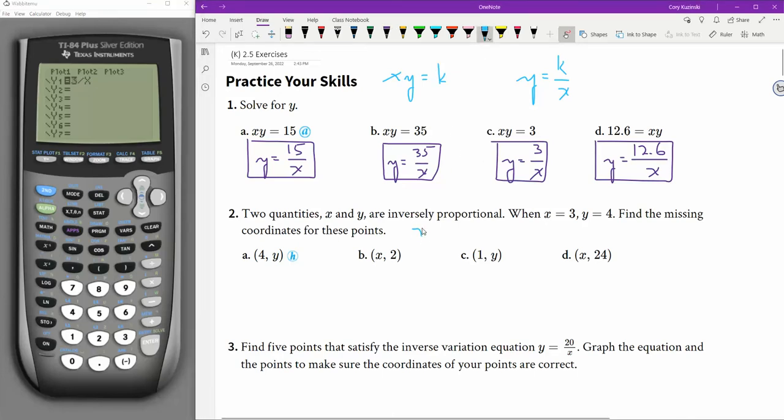So, x times y equals k, right? So, in this case, x is 3 and y is 4 and 3 times 4 is 12. So, k is 12. So, y equals 12 over x. If x is 4, then we're just doing y equals 12 over 4. Y must be 3. 4 times 3 is 12.